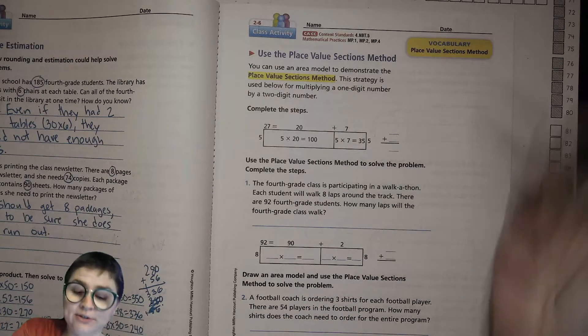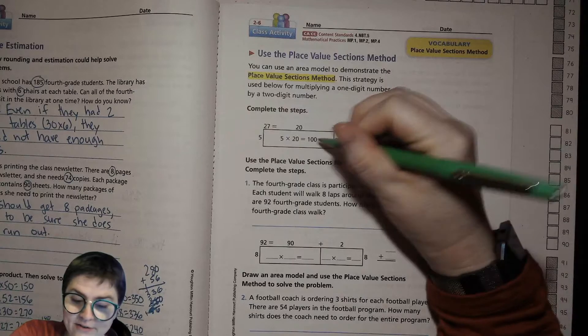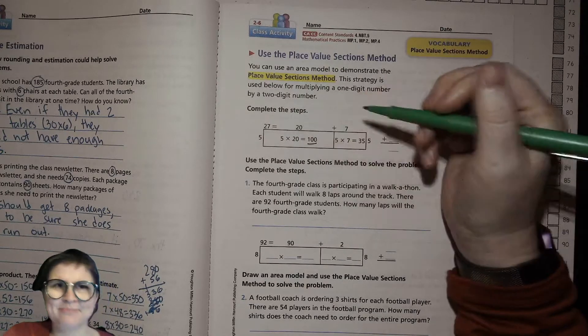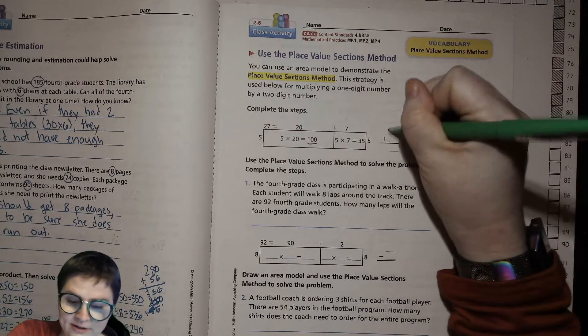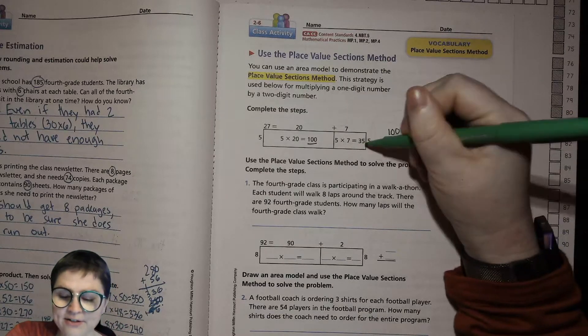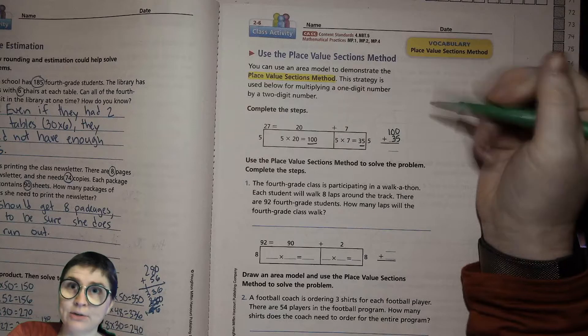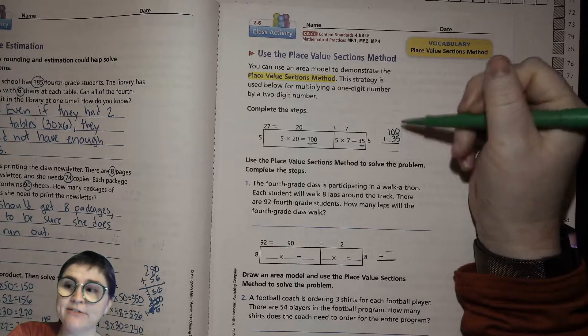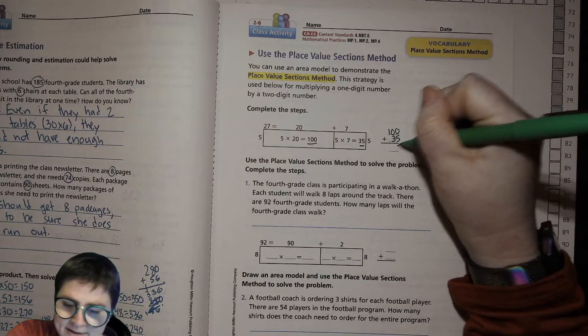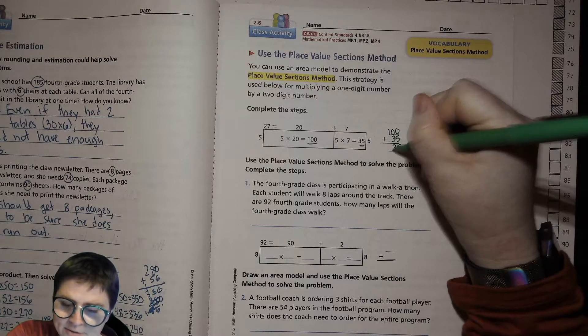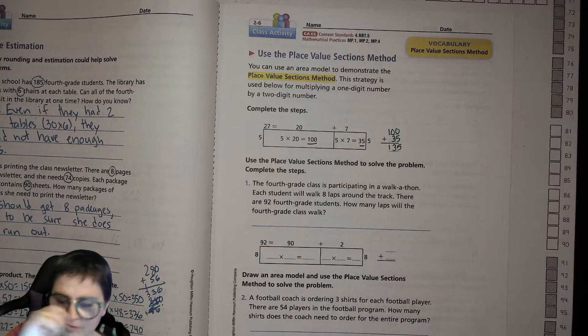Now all we have left to do is add those. Let's write our first partial product: 100, and then our second partial product: 35. Continue to be careful about lining up our place value like we always do, and then we have 5 ones, 3 tens, 1 hundred: 135.